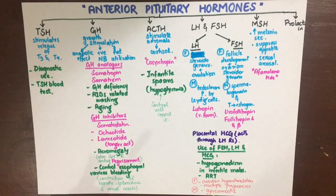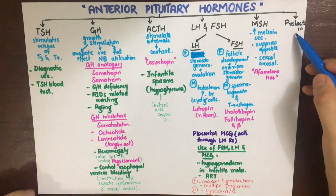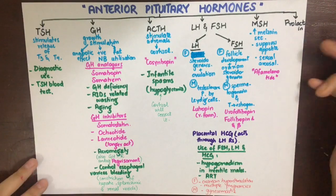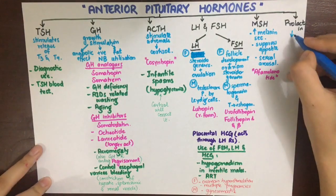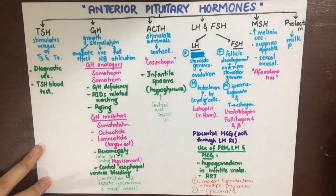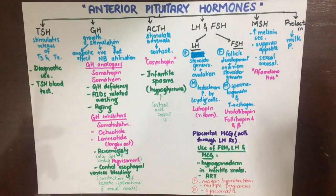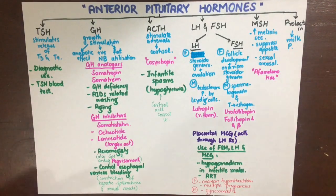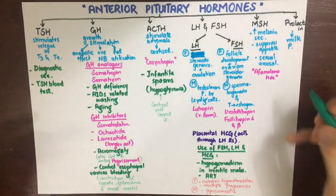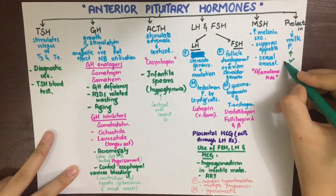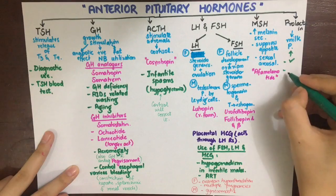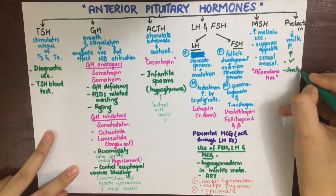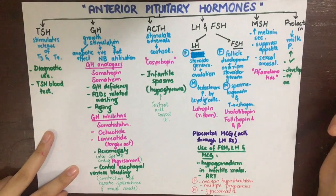Lastly, prolactin — also known as mammotropin or lactogenic hormone — causes milk production. The drug form of prolactin is yet being developed as a reversible male contraceptive and is not in use yet.